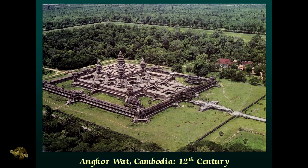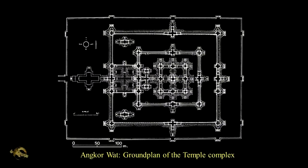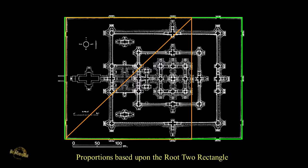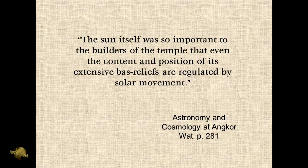Angkor Wat, Cambodia, 12th century, laid out on a grid on the ground plan. There's the ground plan of the temple, and we lay a square on top of it, then put in the diagonal of the square, and by swinging that diagonal down it generates a perfect root two rectangle — the outline in green. So it would appear that in ancient Cambodia they were using the same system of geometry as the cathedral builders. Chartres Cathedral and Angkor Wat were being built at the same time. The astronomical alignments in Angkor Wat were so important to the builders that even the content and position of its extensive bas-reliefs are regulated by solar movement.